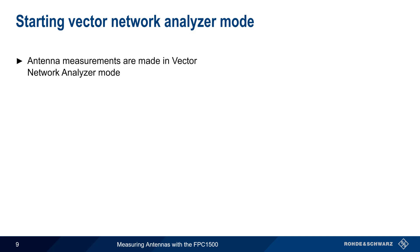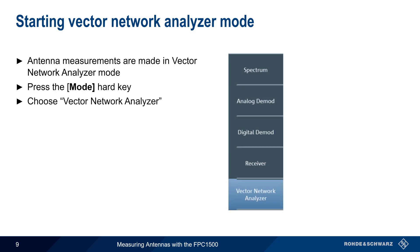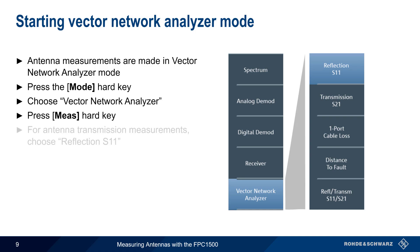Antenna measurements on the FPC-1500 are made in Vector Network Analyzer mode. To enter this mode, press the Mode key on the front of the FPC and then choose Vector Network Analyzer. Next, press the Measure hard key and choose Reflection S11. This is the mode used for making all types of antenna impedance measurements.